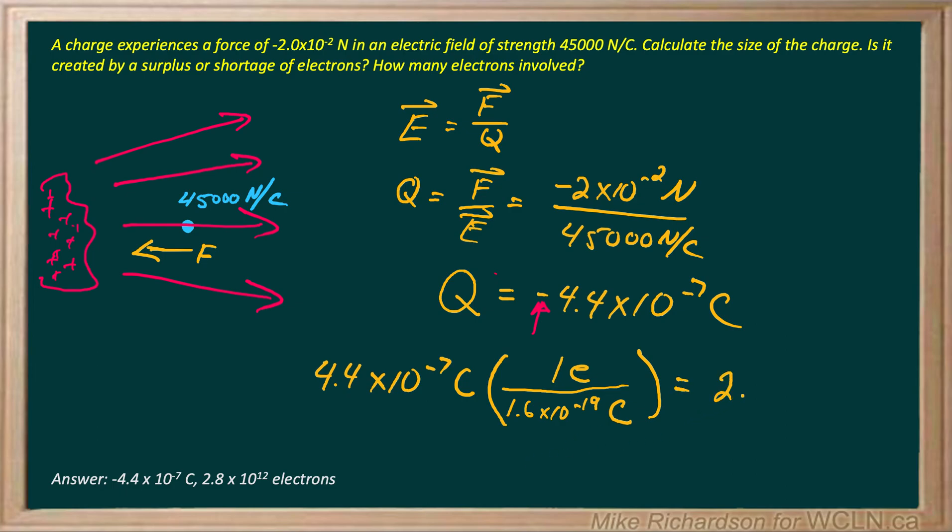I end up getting the number of electrons, since my Coulombs will be cancelled off, of 2.8 times 10 to the 12 electrons. So notice our units cancel off and we're left with the number of electrons.